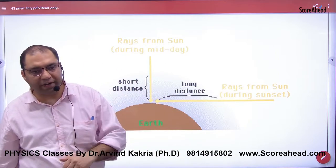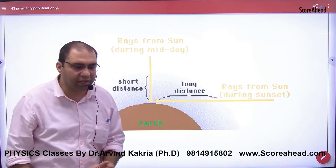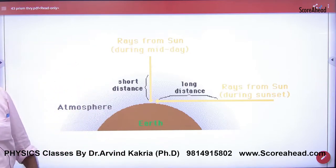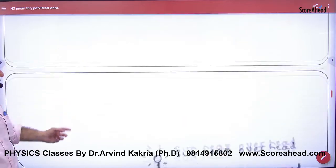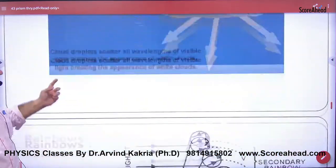So red has the least scattering, so red color signals are used most for danger signals. Because if you use white or other colors, scattering will occur, it won't travel far distances and will get distorted.